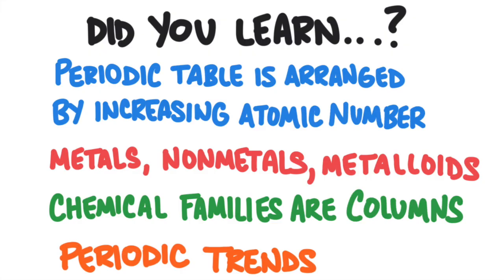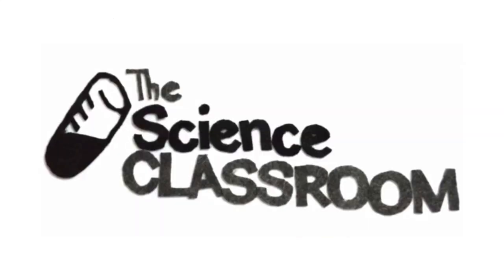So did you learn everything in this lesson? If you did, you learned that the modern periodic table is organized by increasing atomic number. There are three broad categories of elements: metals, nonmetals, and metalloids. Elements in the same column are similar to one another — we call these chemical families or groups. Finally, we learned about three different trends in the periodic table: electronegativity, ionization energy, and atomic radius.